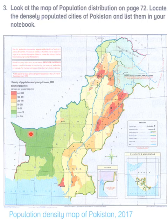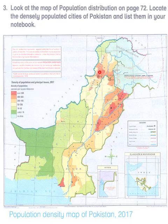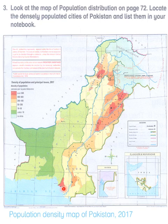The first map is the one given in your book — it shows the population density map of Pakistan from 2017. The red color indicates the highest density, over 800 people living in one square kilometer. These high-density areas include places in Khyber — Peshawar, Nowshera, Kohat — and then Islamabad, Jhelum, Gujrat, Lahore, and up to Karachi.